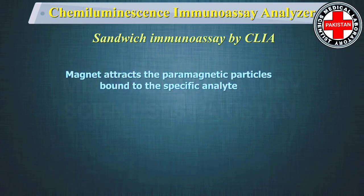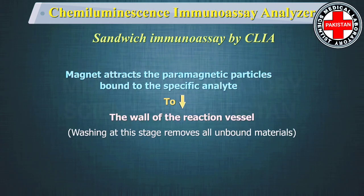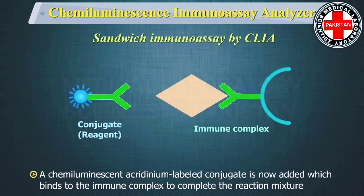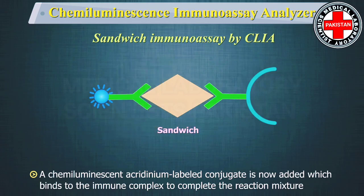A magnet attracts the paramagnetic microparticles, now bound to the specific analyte, to the wall of the reaction vessel. Washing at this stage removes all unbound materials. A chemiluminescent acridinium-labelled conjugate is then added, which binds to the immune complex to complete the reaction mixture.